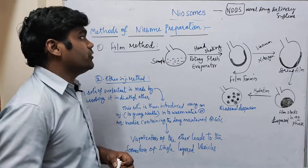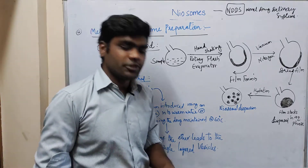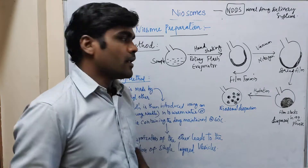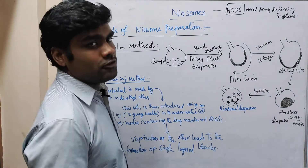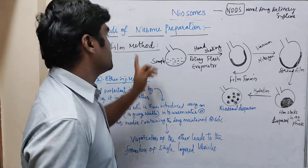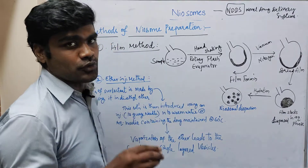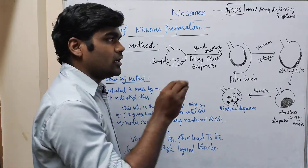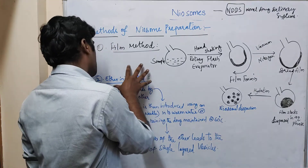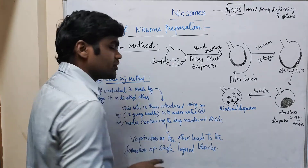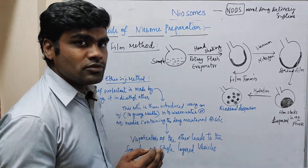These are the methods of neosome preparations. We are going to discuss two methods: the film method and the ether injection method. Both methods will finally give a target drug delivery system.